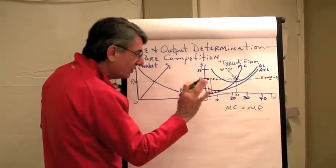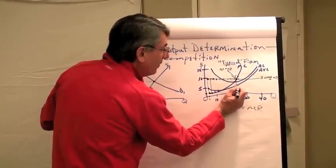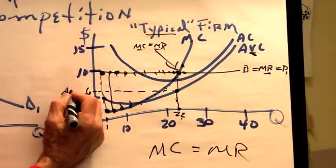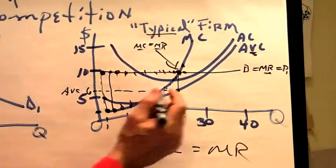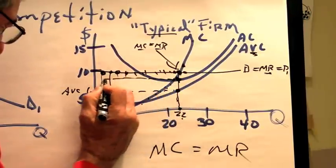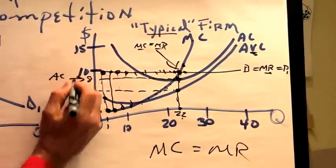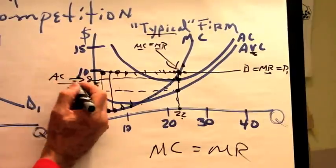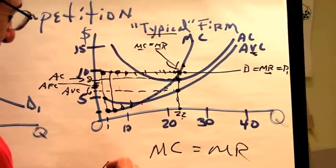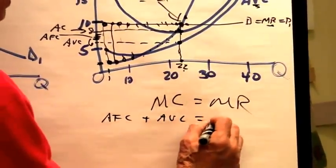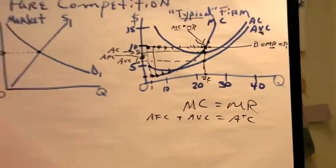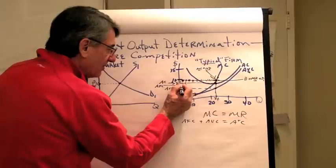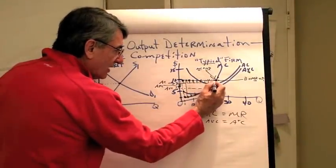When they produce 22 units, this point on the average variable cost curve says that $6 is the average variable cost of producing each of these 22 units. This point is on the average cost curve, and it says $8 is the average cost of producing each of these 22 units. The difference between these two is the average fixed cost, because average fixed cost plus average variable cost equals average total cost. If the average total cost is $8 and the price they're getting for each of these is $10, then they're making $2 profit on each of the 22 units.